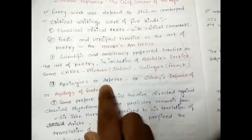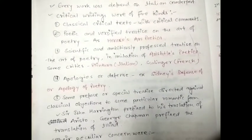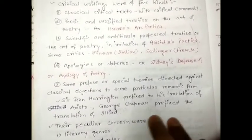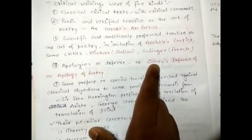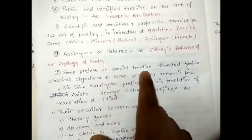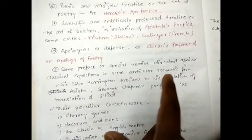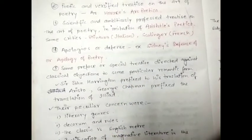The fourth kind was apology and defense of poetry. The fifth was some preface or special treatise directed against classical objections to a particular romantic form — for example, Sir John Harington's preface to his translation of Ariosto, and George Chapman's preface to his translation of Homer.